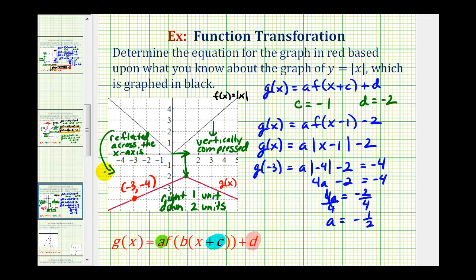Notice a is negative. That gives us a reflection. Then the one-half gives us the vertical compression. So now we have g of x, we just have to substitute negative one-half for a. So we have g of x equals negative one-half times the absolute value of x minus one minus two.